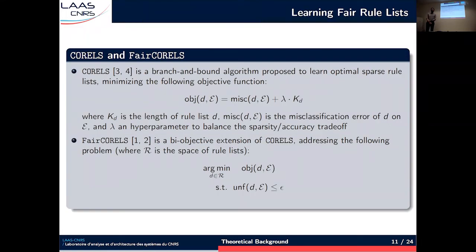Different methods have been proposed in the literature to learn rule list models. Among them, Corels is a branch-and-bound algorithm proposed to learn optimal sparse rule lists, minimizing a weighted sum of classification error and rule list length, where lambda is a hyperparameter controlling the trade-off between sparsity and accuracy. In a previous work, we proposed Fair Corels as a bi-objective extension of Corels, where we also learn optimal rule lists minimizing this same objective function, but we also want to ensure that the final rule list satisfies some fairness constraints, measured using any of the statistical fairness metrics presented earlier.